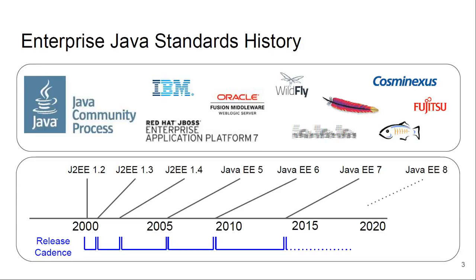There are some relevant points about problems with Java EE, such as the speed at which it moves. There have been eight releases in 20 years. Many people complain that it isn't able to adapt quickly enough to the changes going on in the industry, such as Internet of Things or cloud.